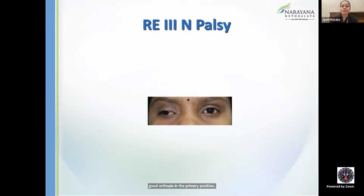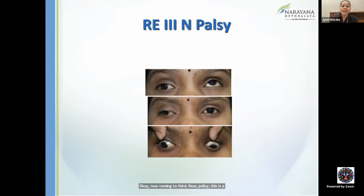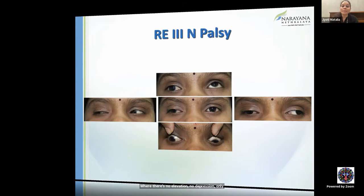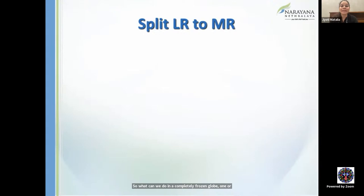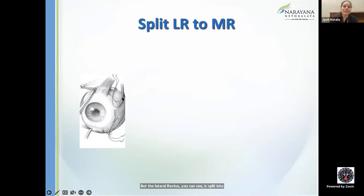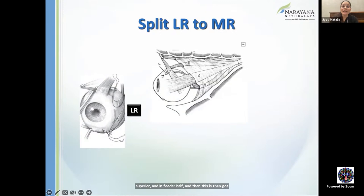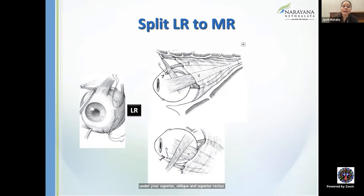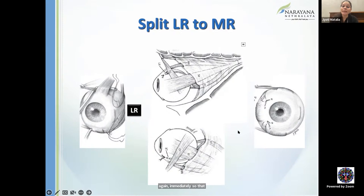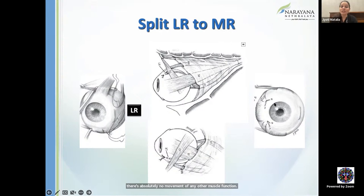For complete third nerve palsy with only abduction present and adduction of minus four, the Y-split lateral rectus to medial rectus procedure is used for a completely frozen globe. The lateral rectus is split into superior and inferior halves, passed under the superior oblique, superior rectus medially, inferior rectus, and inferior oblique medially, then sutured close to the globe. This totally eliminates LR function and should be reserved for cases with no other muscle function when the goal is purely cosmetic alignment.